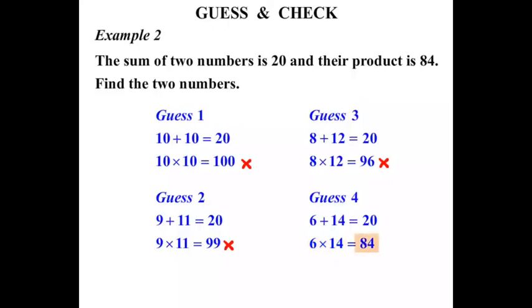And 84, yes! That's the one we wanted. So we've got the two numbers. Let's just put a little rectangle around that. That's our fourth guess was the one we got right.